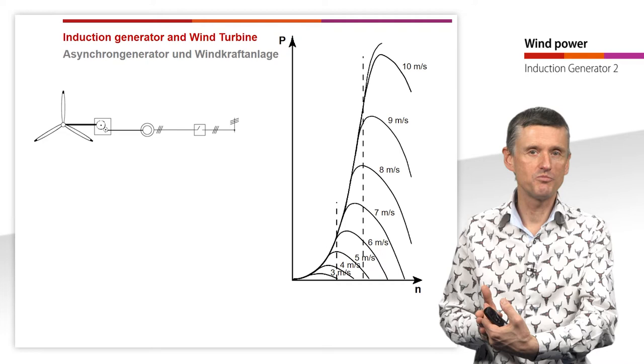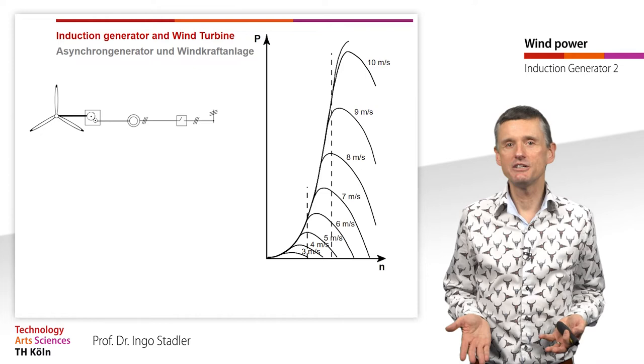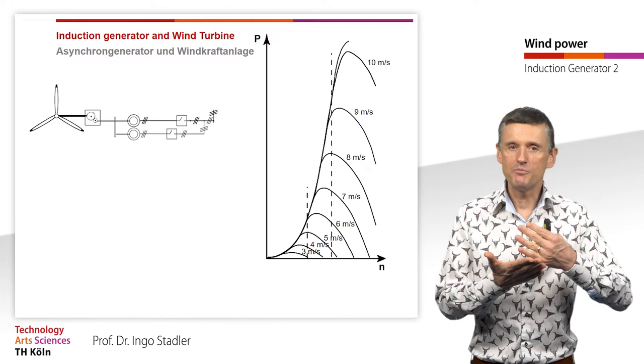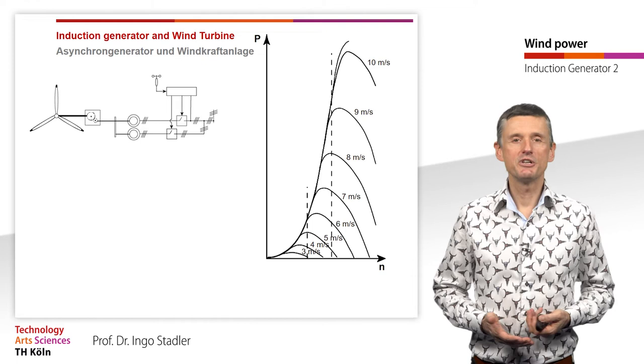And so in the 1990s, that was the idea then to have two generators in a wind turbine, or maybe not two generators, but a generator where we can step from one pole pair number to a second pole pair number.